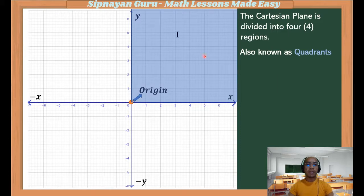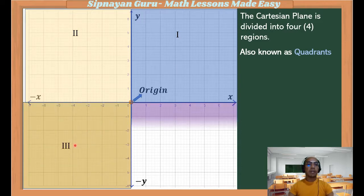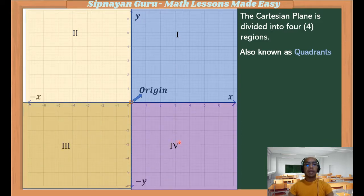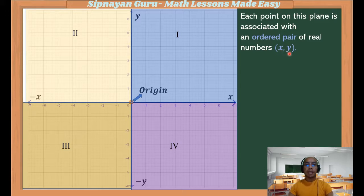First is the first quadrant, represented by Roman numeral I; the second quadrant, the third quadrant, and the fourth quadrant. Each point on the plane is associated with an ordered pair of real numbers, x and y. It is called an ordered pair because always the first number is the value of x, while the second number is always the value of y.